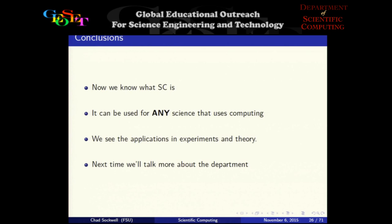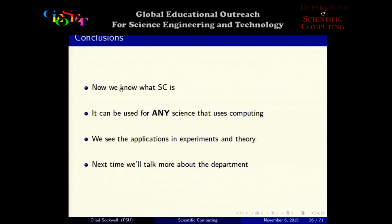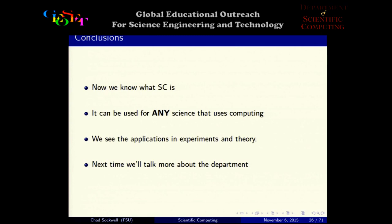In conclusion, we've covered what scientific computing is: an interdisciplinary field applicable to any science — physics, biology, economics, chemistry, engineering, neuroscience, and more. We've seen how it can be used in applications, experiments, and theory. Next time, we'll talk more about the department and some of the research that goes on there.